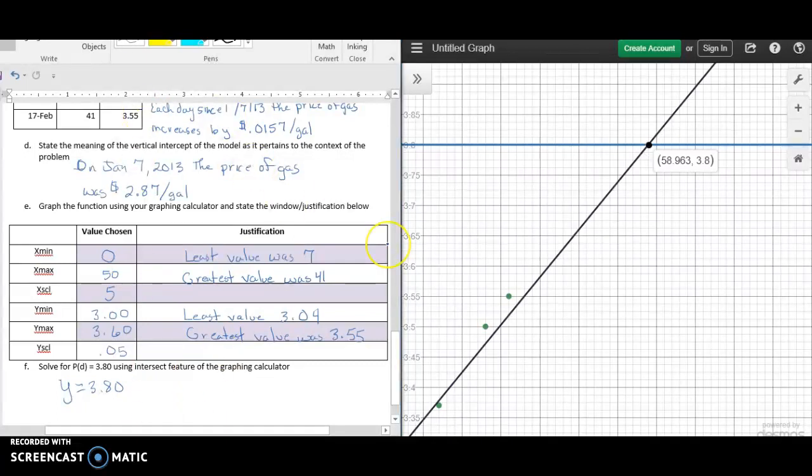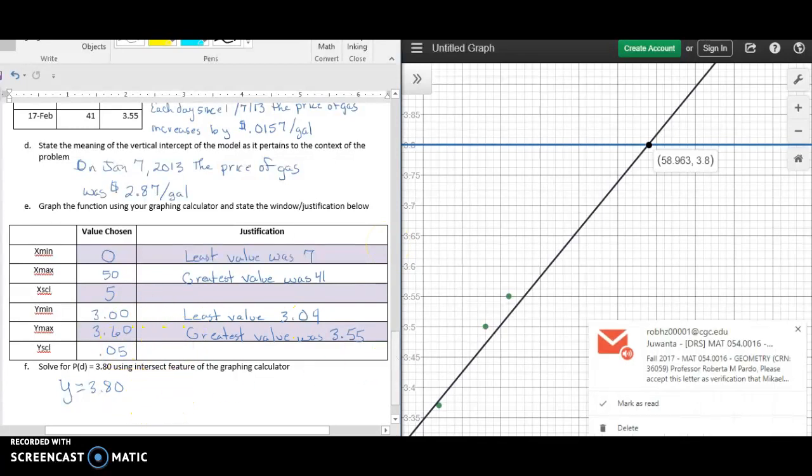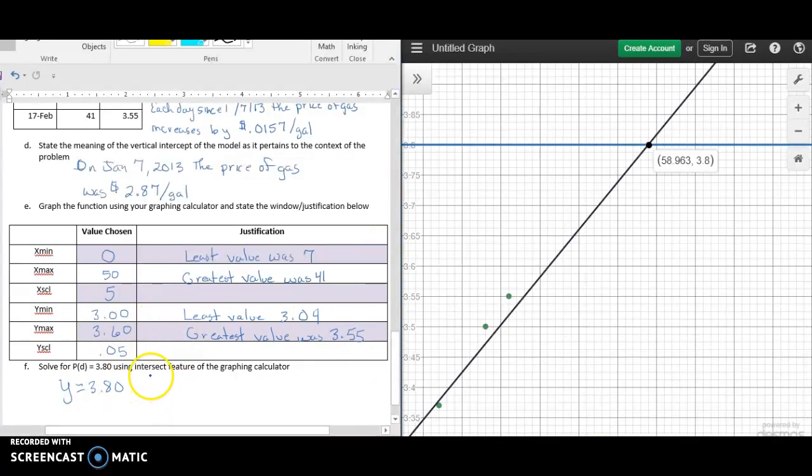We know that the answer is 58.96. So we have p of 58.96 is equal to $3.80. If we want to write that in a complete sentence, we'd say 58.96 days after January 7th of 2013, the price of gas was $3.80 a gallon.